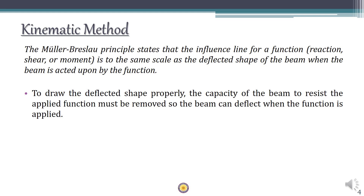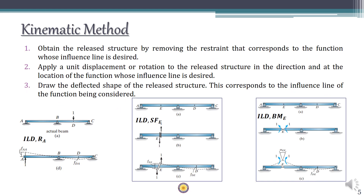In order to get the deflected shape, the capacity of the beam to resist that particular function must first be removed, and then we apply that particular function so that the beam deflects accordingly. For example, consider a two-span beam, indeterminate to one degree. If we want to draw the ILD for reaction at A, we remove the support — RA is a restraint — making A a free end. Once the reaction is removed, we apply a unit displacement at the released structure in the direction of RA, which was acting upward, so we give a unit upward displacement at A.